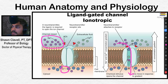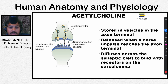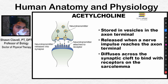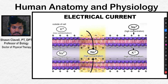The neurotransmitter acetylcholine is stored in the axon terminal. It's released when a nerve impulse reaches the axon terminal, diffuses across the synaptic cleft, and then binds to receptors. That action potential will then travel across the entire cell membrane like an electric current.